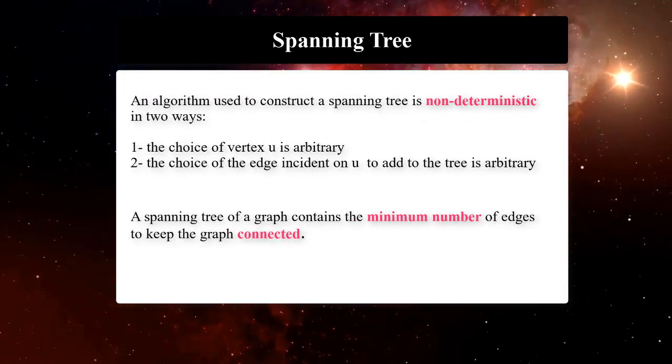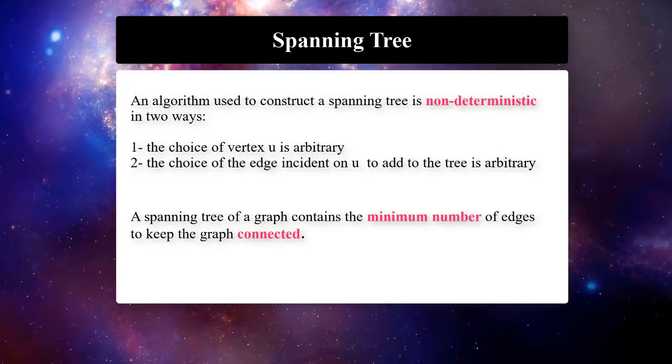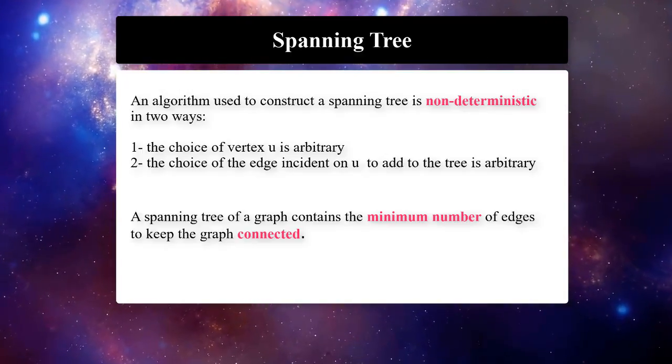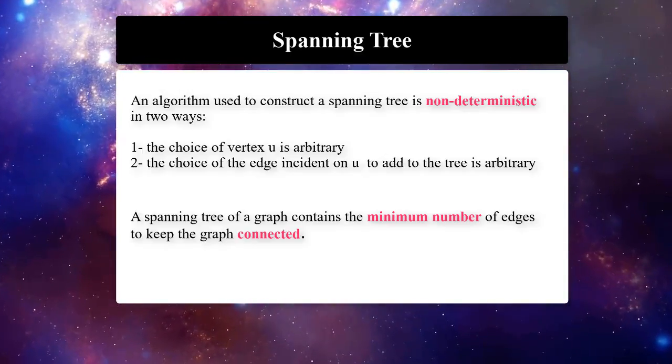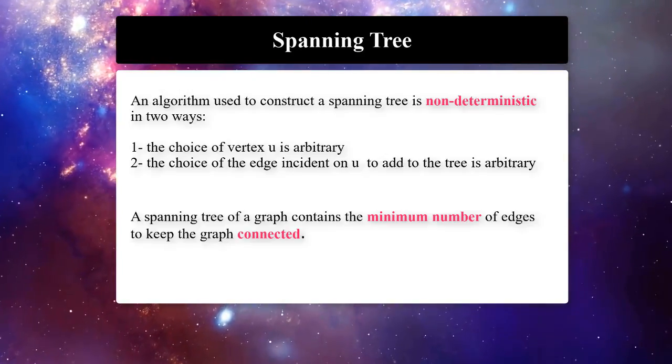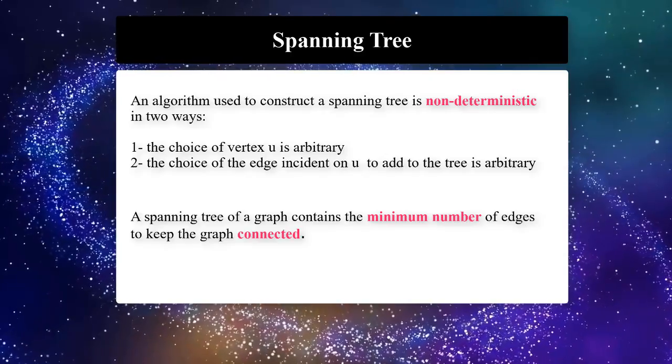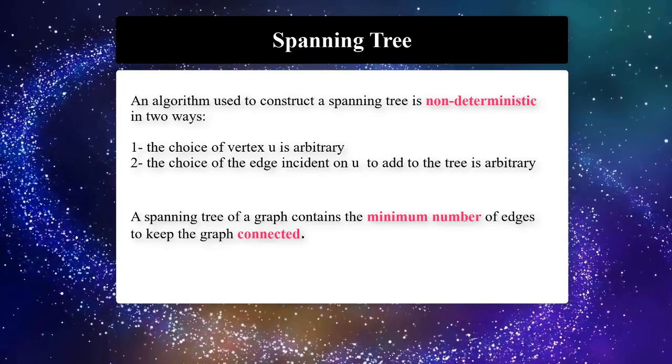The spanning tree of a graph contains the minimum number of edges to keep the graph connected. An algorithm used to construct a spanning tree is non-deterministic in two ways: the choice of vertex u is arbitrary, and the choice of the edge incident on u to add to the tree is arbitrary.